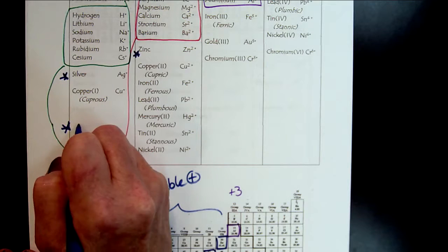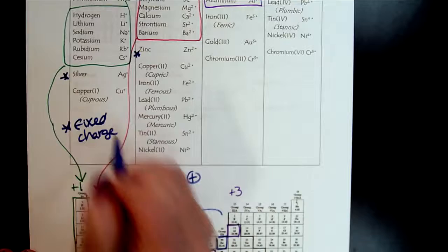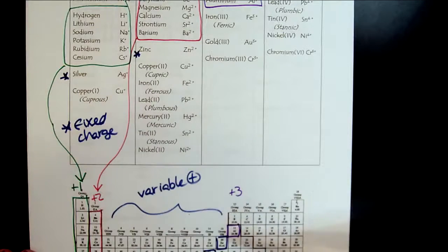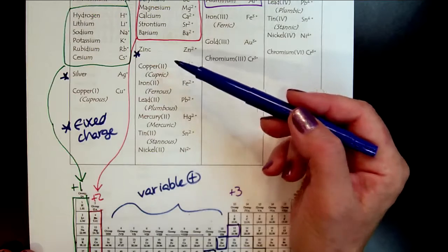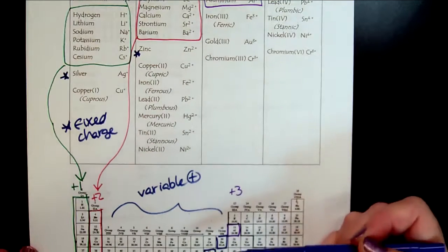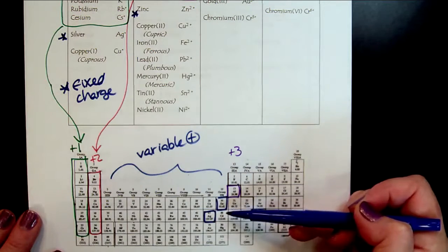These have fixed charge. So they're exceptions to the rule. So silver and zinc don't have Roman numerals, even though we might expect it because they're tried and true. Silver is always going to be plus one and zinc is always going to be plus two.